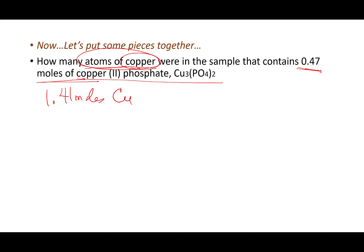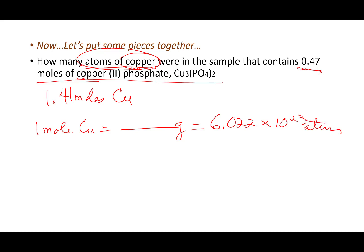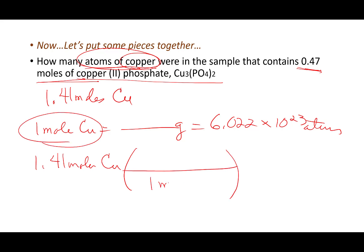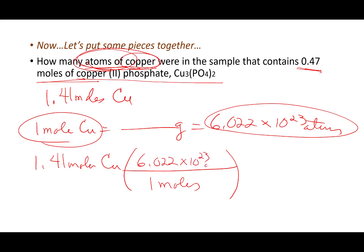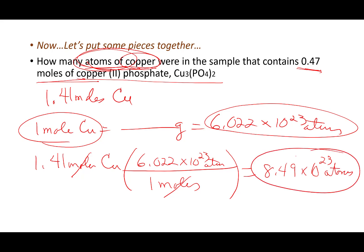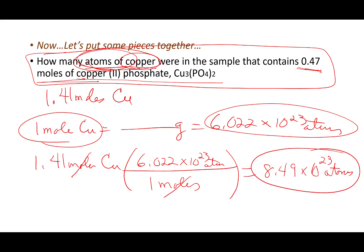Remember from the periodic table, we wrote equivalencies: one mole of anything is 6.022 × 10²³ atoms. We use this to draw a tie fighter and convert. I've got 1.41 moles of copper — set up a tie fighter, put moles on the bottom to cancel it, put atoms on top with 6.022 × 10²³. When I do the math and throw it in my calculator, I end up with 8.49 × 10²³ atoms. Take two pieces of information, slap them together — it might have felt scary, but you're just combining two skills.